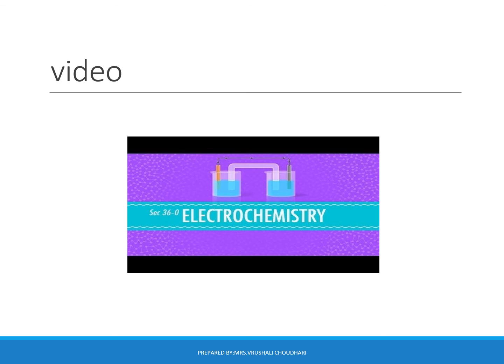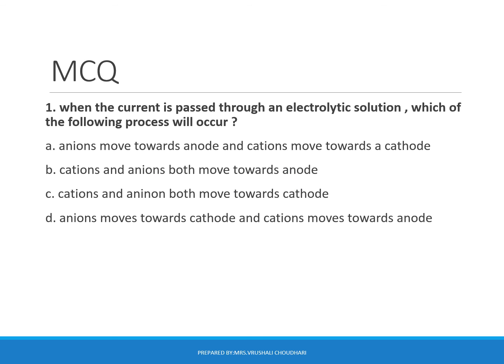Here we will see a video of how electrolysis takes place. Now we will solve an MCQ based on this. When current is passed through an electrolytic solution, which of the following processes will occur? An electrolytic solution is a mixture of anions and cations — positively charged cations and negatively charged anions — both able to move in equal and opposite directions. Anions move towards the anode and cations move towards the cathode. So the answer is the first option.